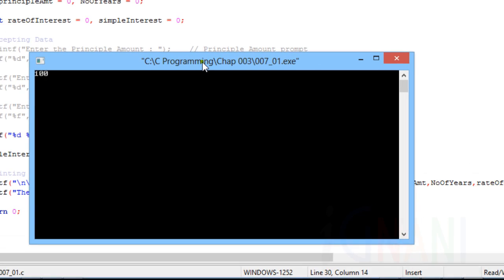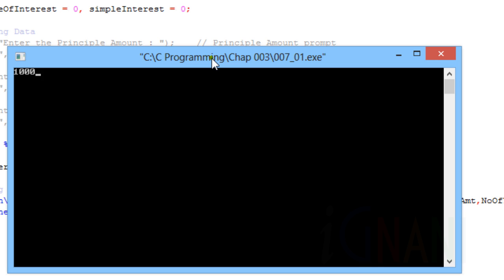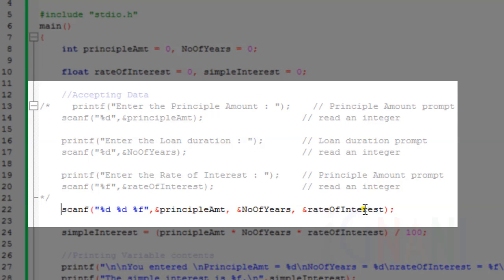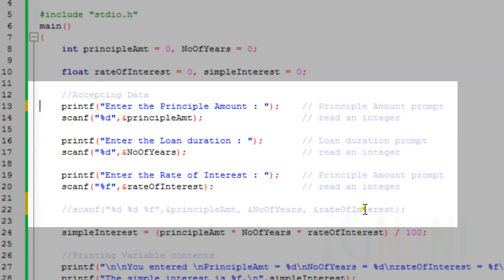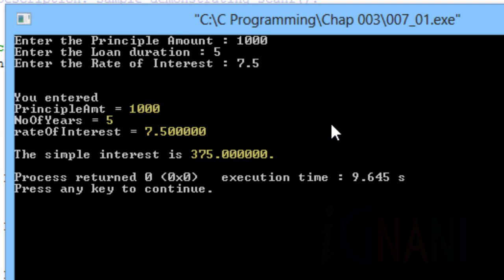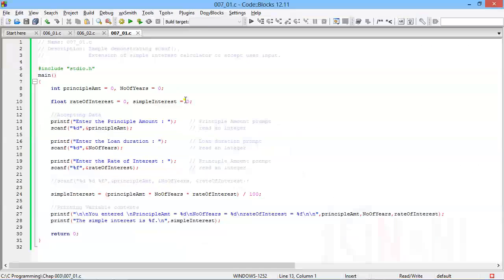Let me execute the program and see how it works. I am still using the single line scanf statement to read data for all the three variables. I use tab to separate the values entered by the user. Notice, the input was read correctly and displayed with the result. Let me revert to individual scanf statement for each variable. The end result is also the same. This completes the scanf statement and our simple interest calculator is also ready.